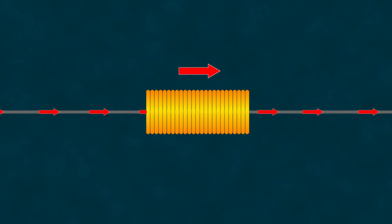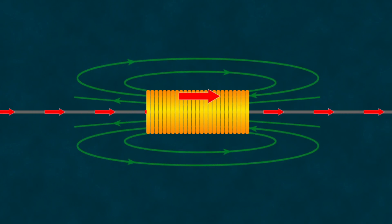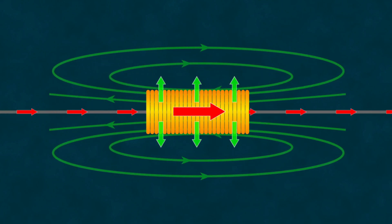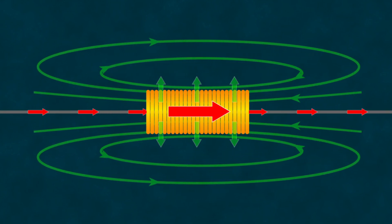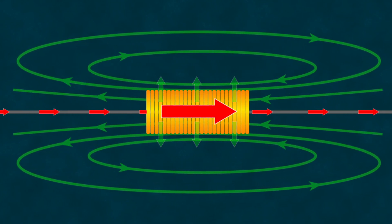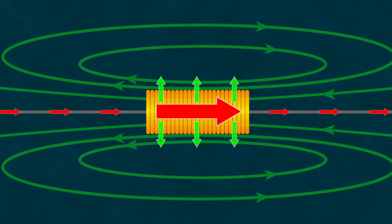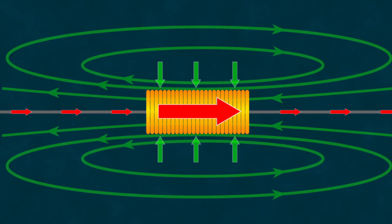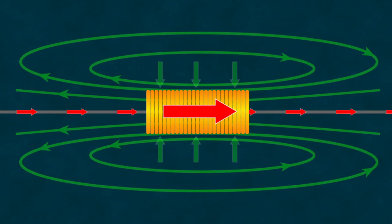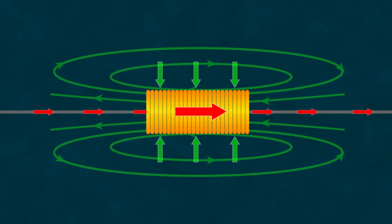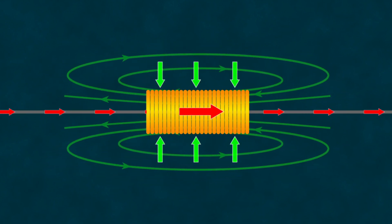You can also explain self-induction from another perspective. The magnetic field has a certain amount of energy. When we increase the current, the magnetic field created by the coil strengthens, increasing the stored energy in the field. During this process, some of the electrical current's energy is used to create the field, reducing the current's energy. Conversely, when the current decreases, the magnetic field weakens and the stored energy is returned to the system, increasing the current's energy. Therefore, the coil can store electromagnetic energy in its magnetic field.